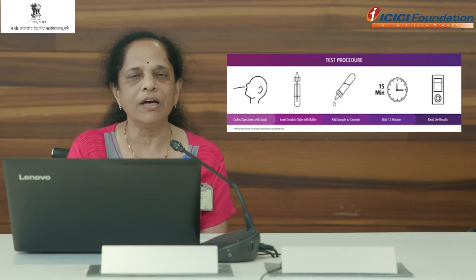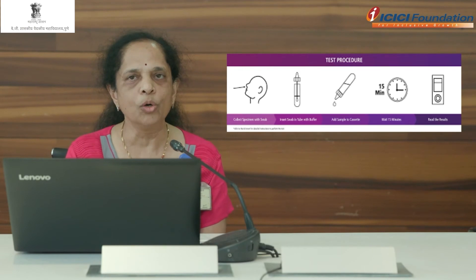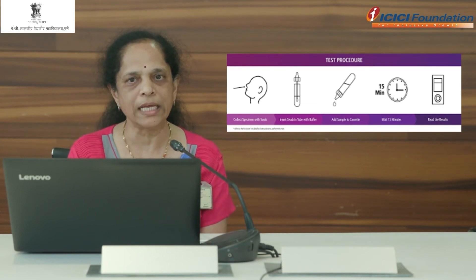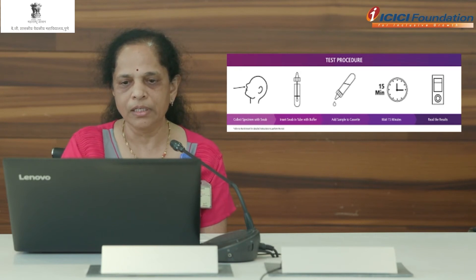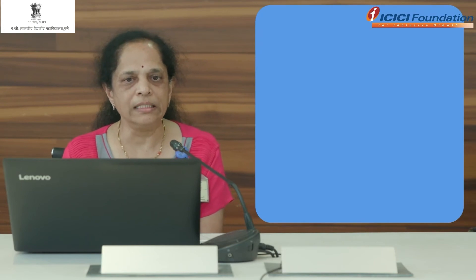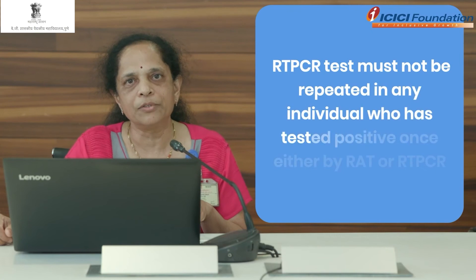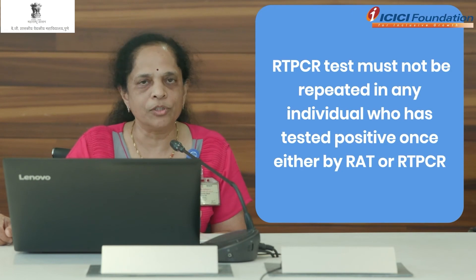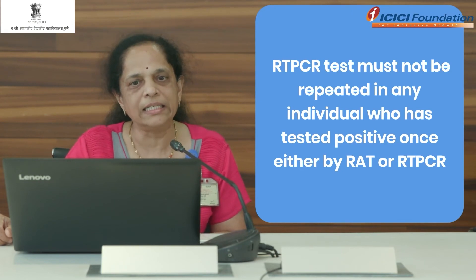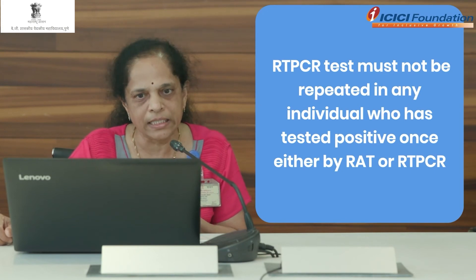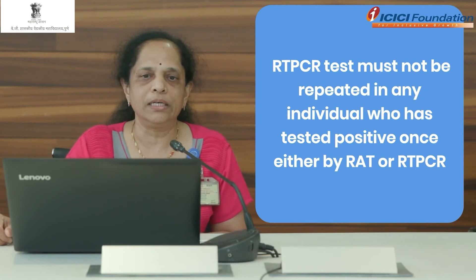It is just a 15-minute procedure: about 1 minute to collect the sample, put it into the lysis buffer, swirl the swab 4 to 5 times, put the nozzle on the tube, add 4 to 5 drops on the cassette, and wait for color development. According to ICMR guidelines, once a rapid antigen test comes positive, that indicates a high viral load. Therefore, ICMR guidelines state that once a person tests positive by rapid antigen test (RAT), there is no need to do the RT-PCR test.